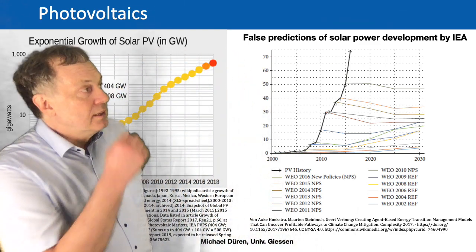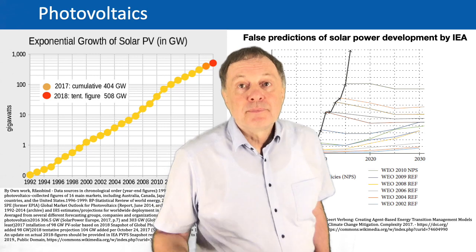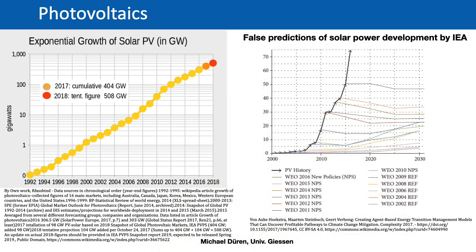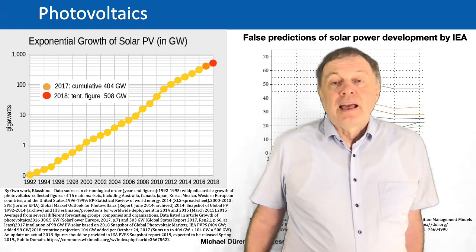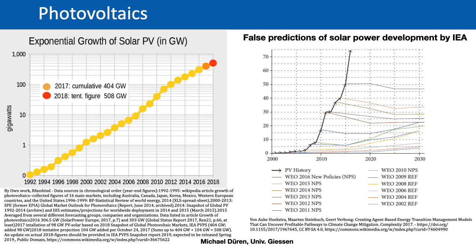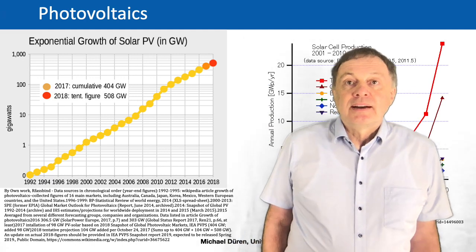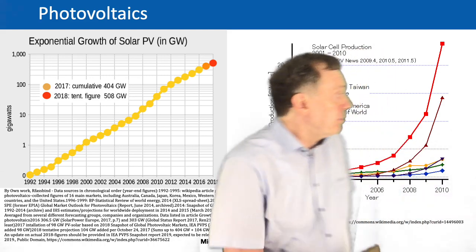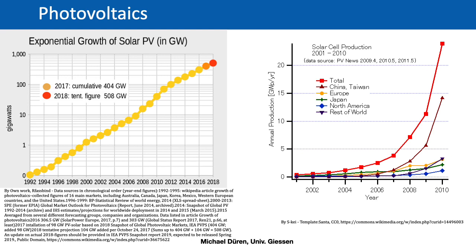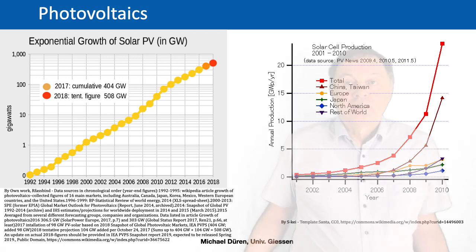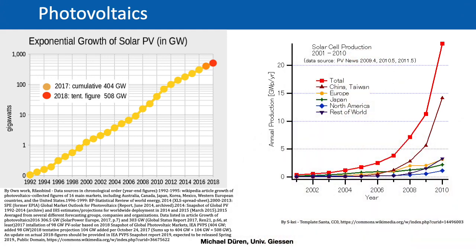The predictions were actually even worse. On the diagram here on the right you see the International Energy Agency had every year predictions in the World Economic Outlook, and every year they somehow predicted that there's no rise of photovoltaics anymore — yet the reality looks really different. Another plot which is also quite interesting is the solar cell production, which also increases exponentially. Most of the photovoltaic production comes from China including Taiwan, but also Europe, Japan, and North America are strong, and more and more countries are producing their own photovoltaic cells.